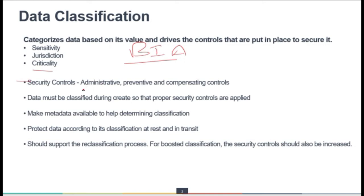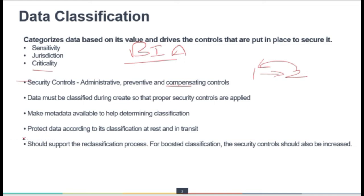There are other aspects like security controls — we choose administrative controls, preventive controls, and accordingly compensating controls. A compensating control is used when we cannot implement a particular security control for technical or cost reasons — we may have another one to replace it. Data must be classified during creation so that the proper security controls are applied. Make metadata available to help determine the classification of that information, and protect data according to its classification at rest and in transit.